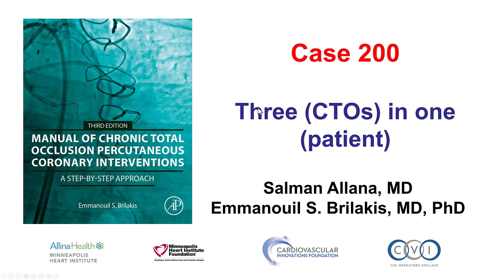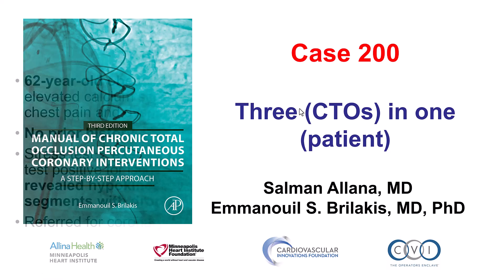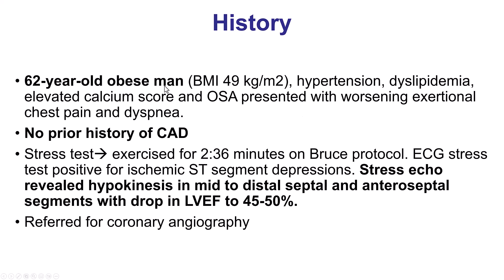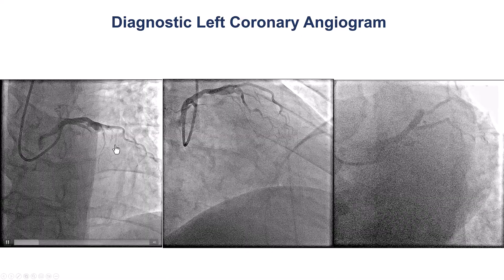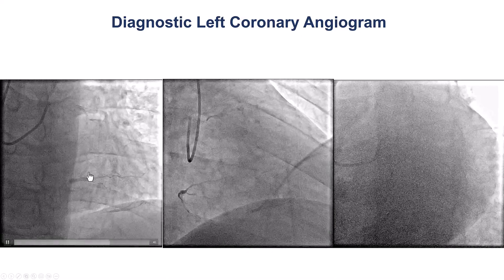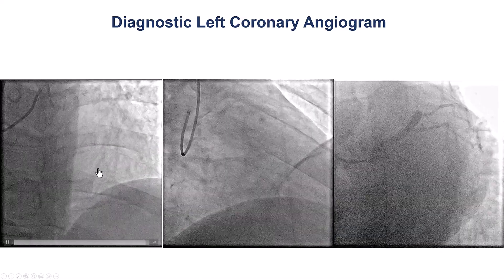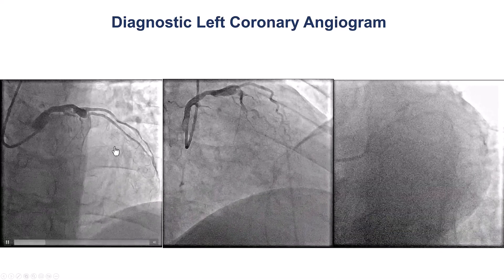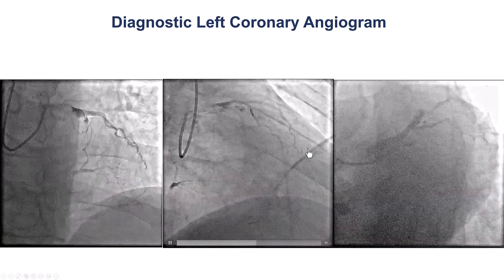This case is about a patient who had three CTOs. The patient was morbidly obese. He presented with worsening chest discomfort and dyspnea, and was found to have a markedly positive stress test. He was sent for coronary angiography that demonstrated a CTO of the LAD, a CTO of the right coronary artery with the distal vessel filling through collaterals, and also a circumflex CTO.